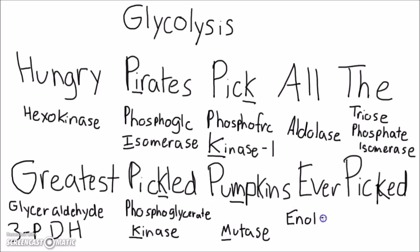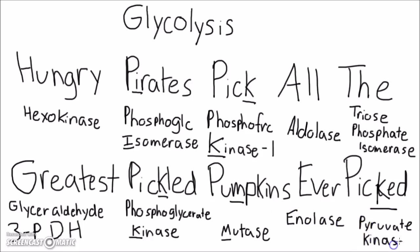'E' — enolase. And 'Picked' has another K, so that's pyruvate kinase. So let's go over these enzymes one more time.